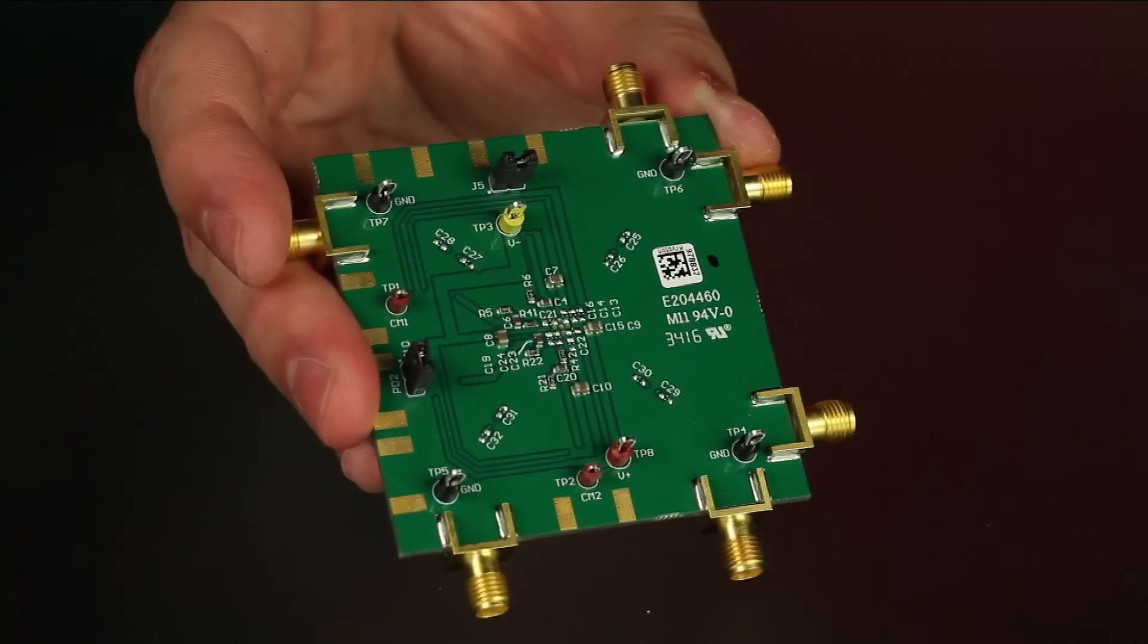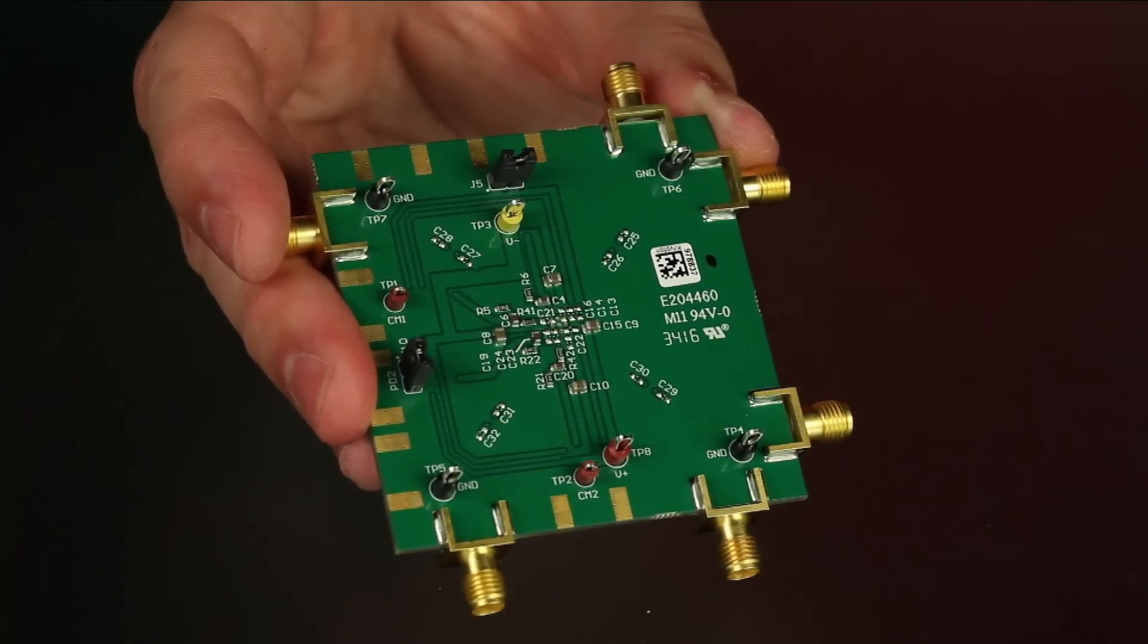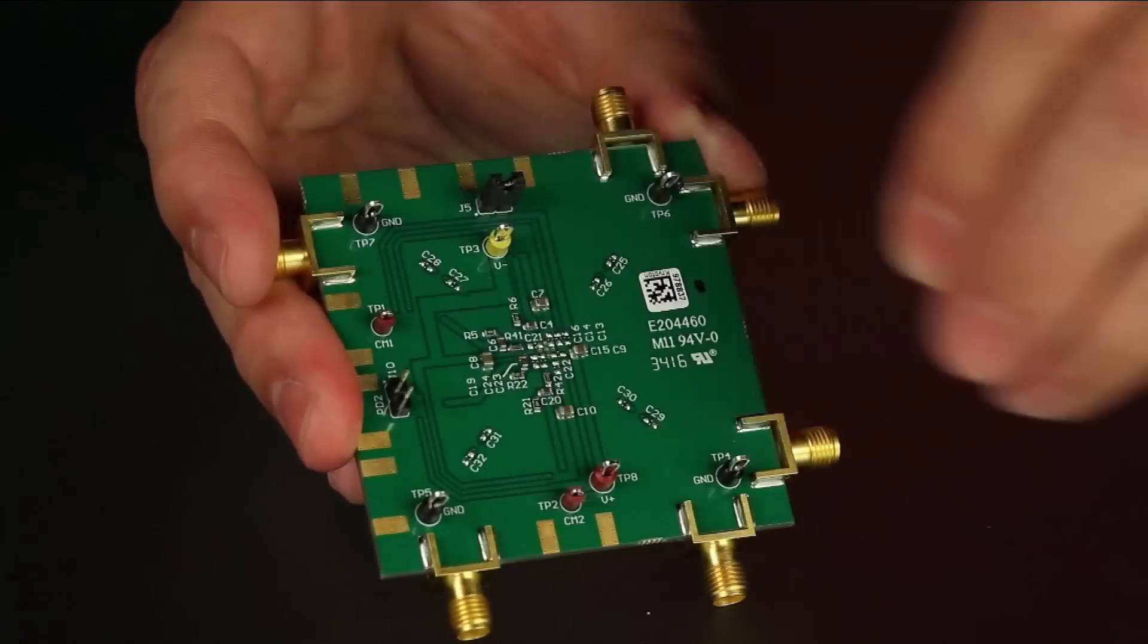When the power down jumper is in place, the amplifier is configured to be in power down mode. When the jumper is removed, the amplifier is in the normal operating mode.